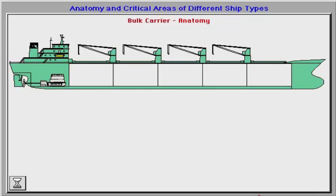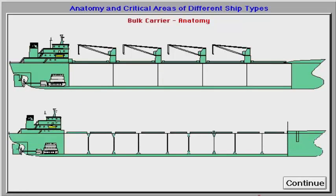The two main types of bulk carriers are those with or without cargo gear for self-loading or discharging in ports with no shore-based cargo facilities. The structural arrangement may be single skin with double bottom and hopper and top wing tanks for ballasting. Some bulk carriers have double skin, like OBOs.